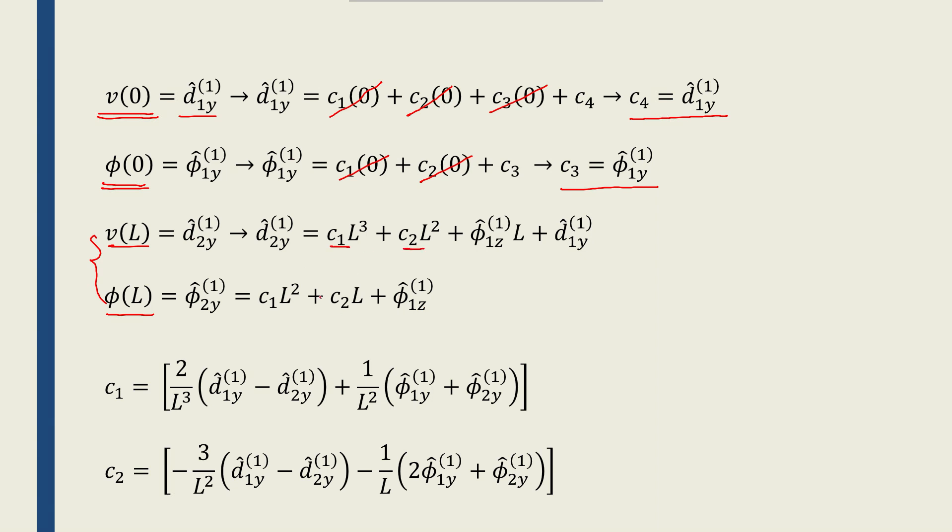I have two unknowns and I have two equations, which I can solve to find C1 and C2. And if I do the mathematics behind these two equations, this system of equations, I will end up with these two values for C1 and C2. So, we found the displacement function for a typical beam element.